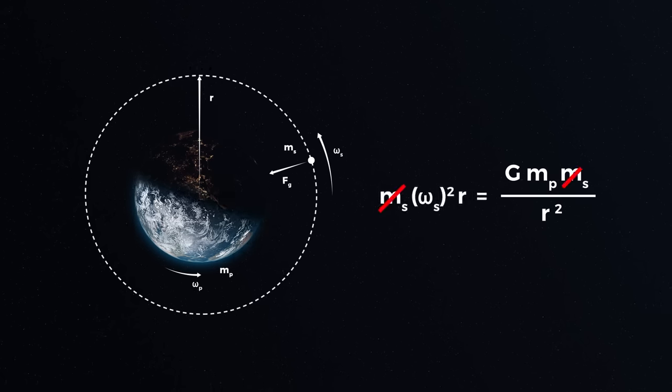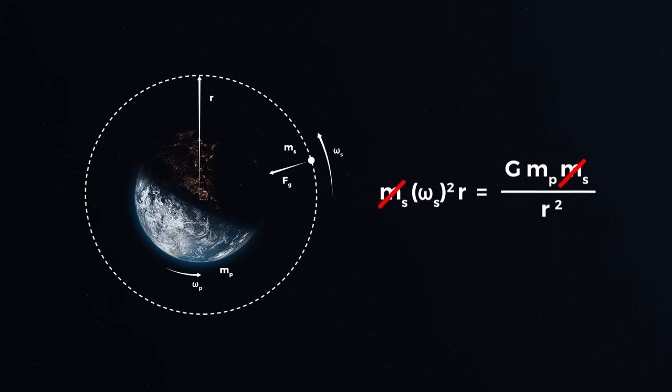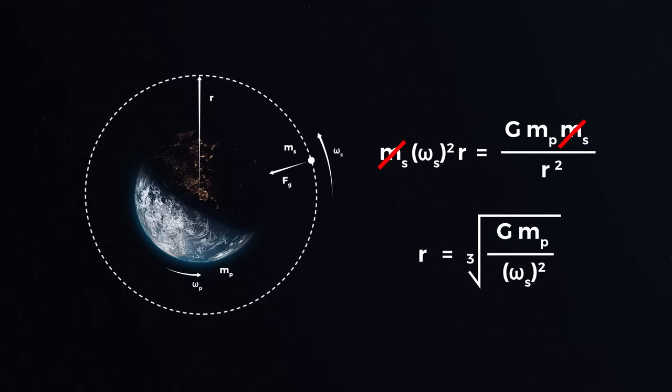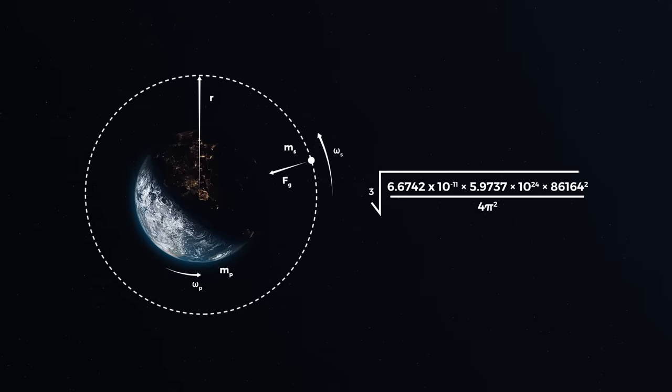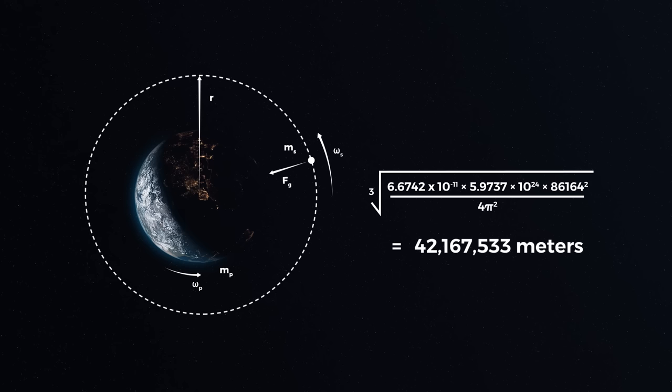The mass of the satellite cancels out while we manipulate the equations to get a value for r, our orbital radius. Now we have an equation with all the known values, which we can solve for by inputting the values for Earth. And we find a value of 42,168 kilometres. This is the distance from the centre of the planet, so we will be about 36,000 kilometres above the surface of the planet at the equator.